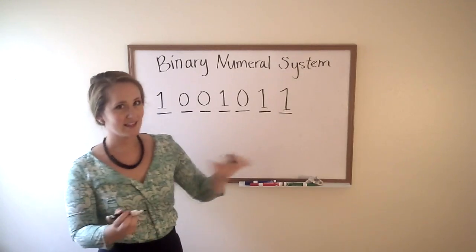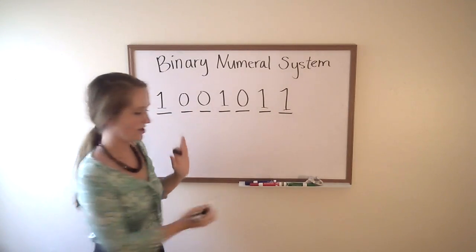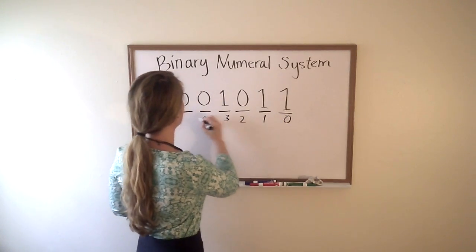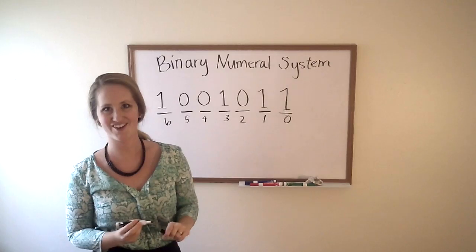We're going to start by labeling, starting backwards, how many numbers there are. This will be zero, one, two, three, four, five, six. Pretty straightforward so far.